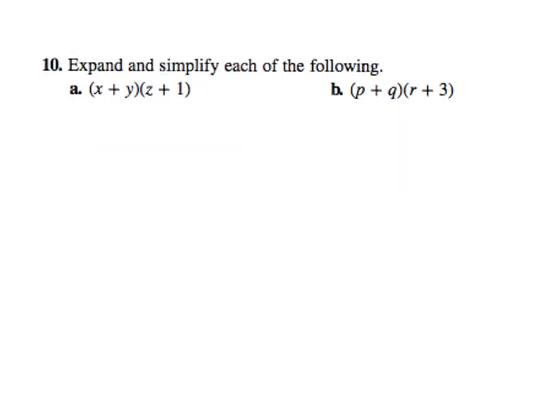And the next ones, so the only difference here is that the letters are different but it doesn't matter, just do the same. So we go x times z which just becomes xz, and then x times one plus x, then y times z which is yz, and then y times one which is y. Now none of these are like terms so I just have to leave it like that.